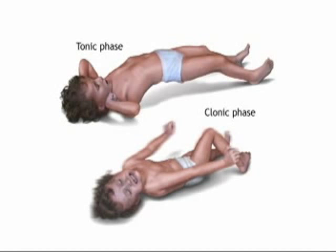Tonic-clonic or grand mal seizures are preceded by an aura and followed by postictal lethargy, confusion, unresponsiveness, and amnesia. The tonic phase is characterized by stiffening of muscles and extremities with loss of consciousness, followed by the clonic phase with rhythmic contraction and relaxation of the extremities. These seizures may be accompanied by loss of bowel and bladder control, a clenched jaw, apnea with cyanosis or hyperventilation, a piercing cry, and drooling.